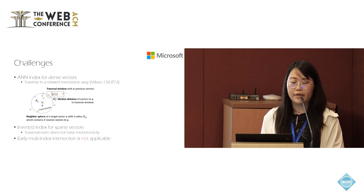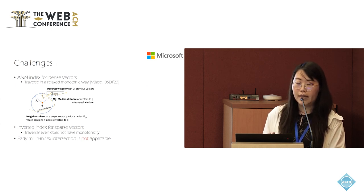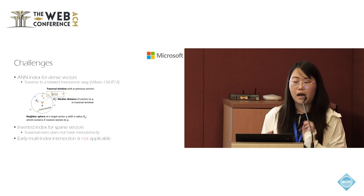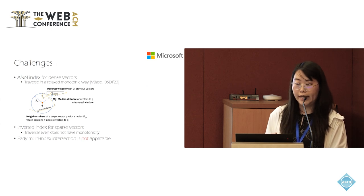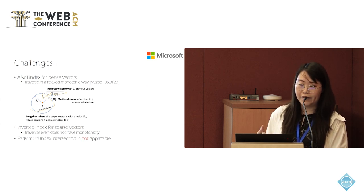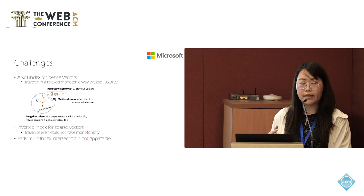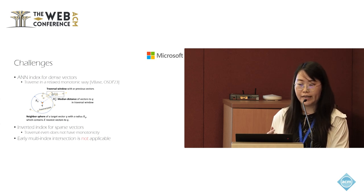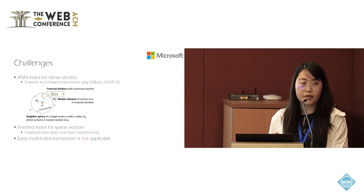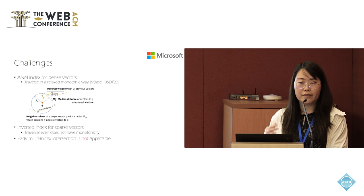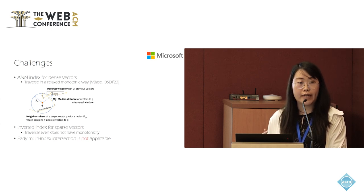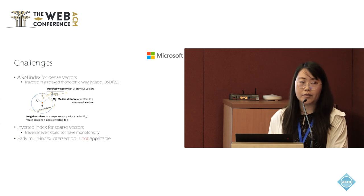Joined retrieval is challenging due to the special traversal manner of different vector indexes. For example, an ANN index for dense vectors traverses the dataset in a relaxed, monotonic way, first approaching the target region and then steadily departing. For inverted index for sparse vectors, the traversal does not even have monotonic scores. Therefore, it remains uncertain whether a result from one vector index will be retrieved from another index, so intersection cannot be easily pushed down.